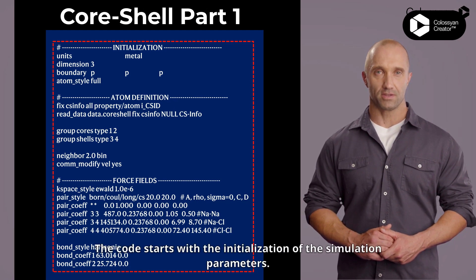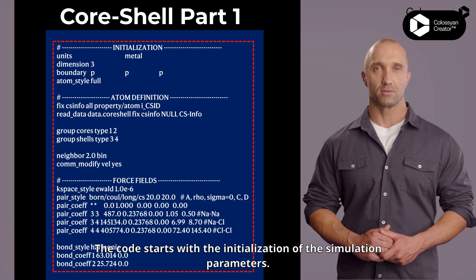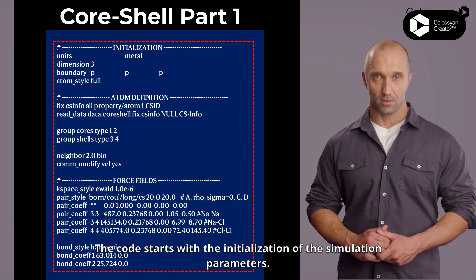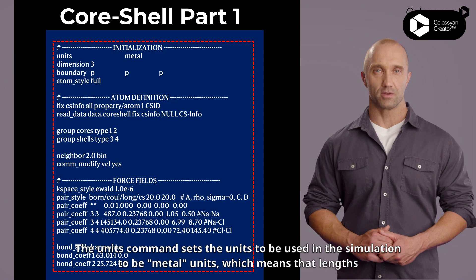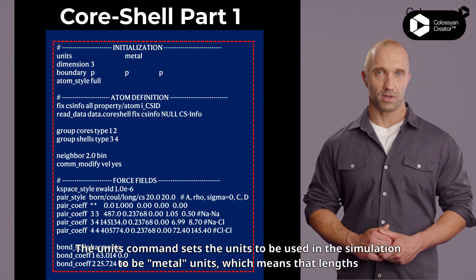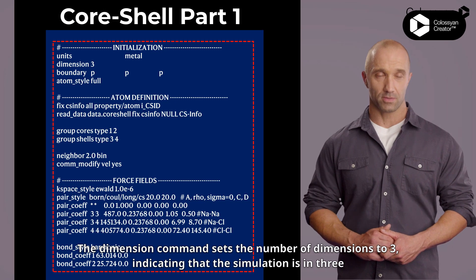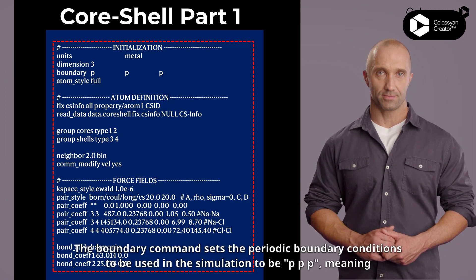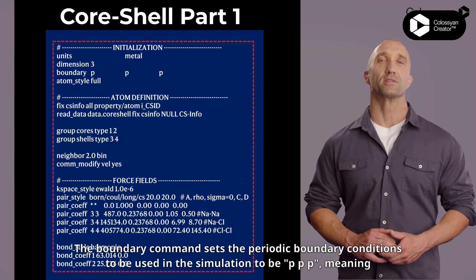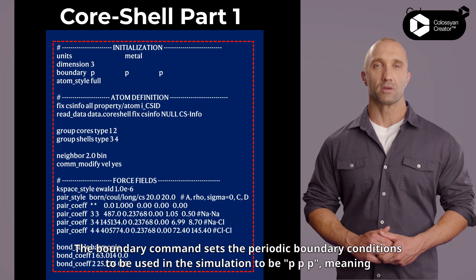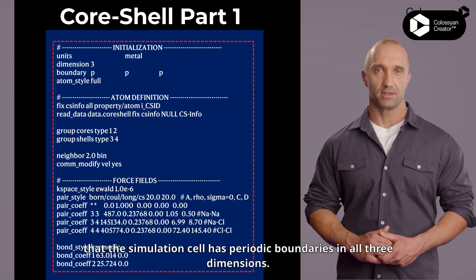Let's talk about the initialization. The code starts with the initialization of the simulation parameters. The units command sets the units to be used in the simulation to metal units, which means that lengths are in angstroms, energies are in electron volts, and masses are in atomic mass units. The dimension command sets the number of dimensions to 3, indicating that the simulation is in 3 dimensions.